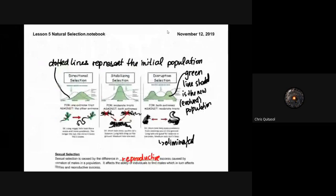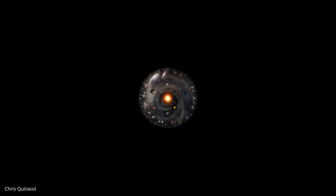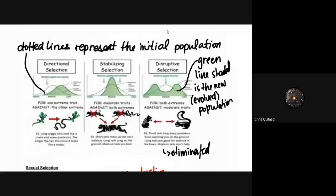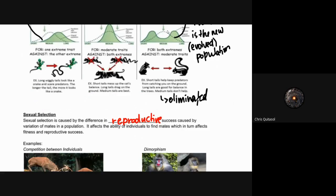These are the three main types of selection, and you absolutely need to know this material. Even if it's not directly tested in isolation, you'll need it for your lab quiz, your research article, and whatever format the final summative takes — it will be a large component. Make sure you understand what each of these three selection processes are.